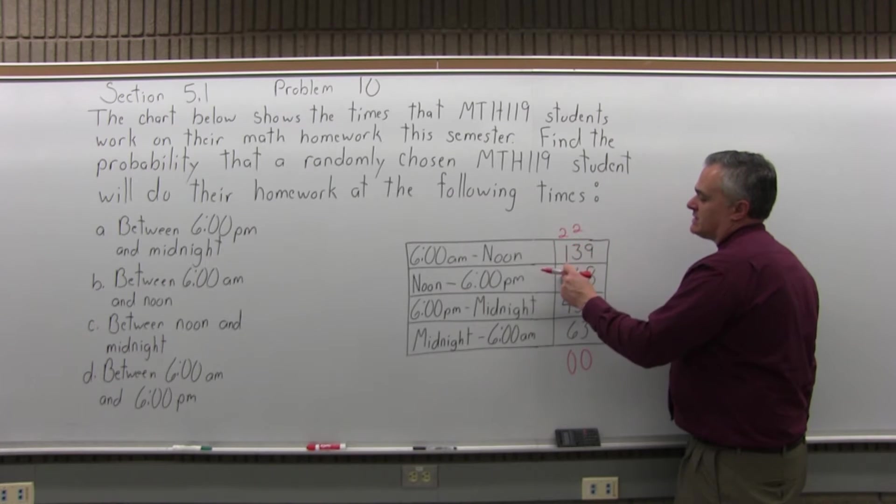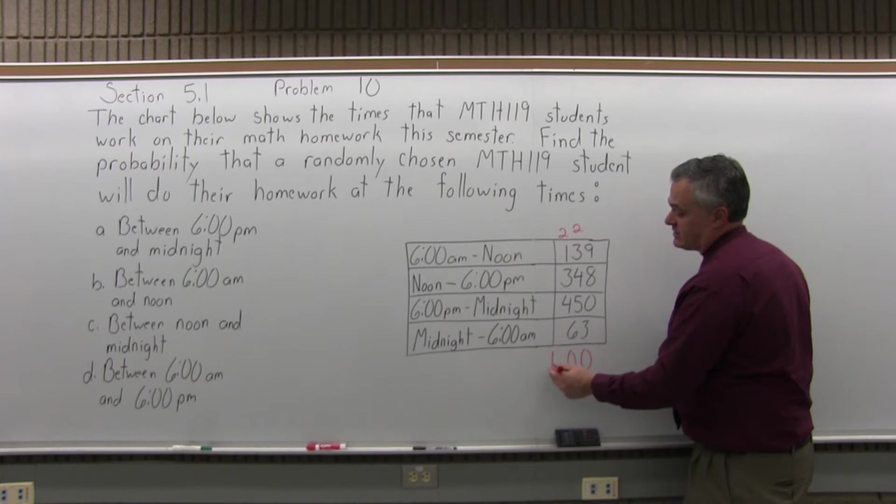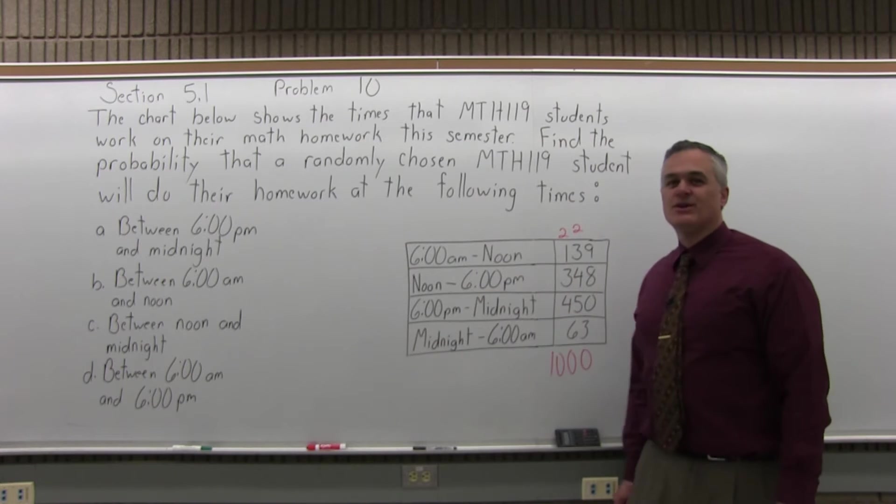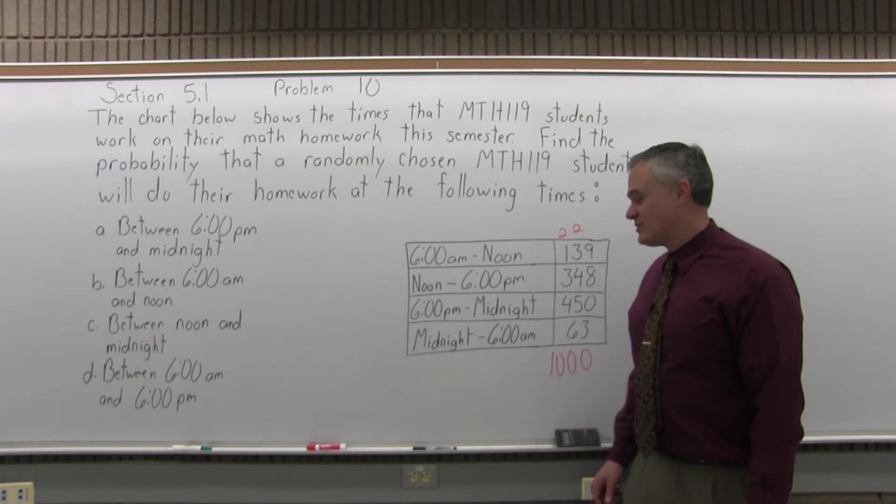2 and 1 is 3, 3 and 3 is 6, 6 and 4 is 10. So conveniently, it's a nice round number of 1,000. There's 1,000 students all together.